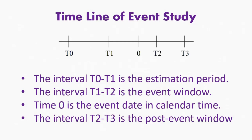T1 to 0 is the pre-event period and 0 to T2 is the post-event period. The pre-event period can be 5 to 10 days prior to the event, and the post-event period may be 5 to 10 days after the event. The interval T2 to T3 is the post-event window, which we normally do not consider. What is important is T0 to T2, where T1 to T2 is the event window and T0 to T1 is the estimation period.